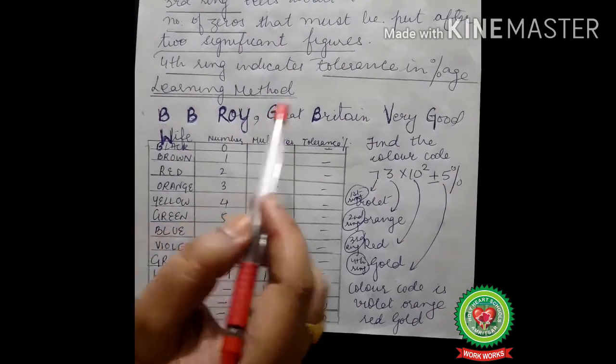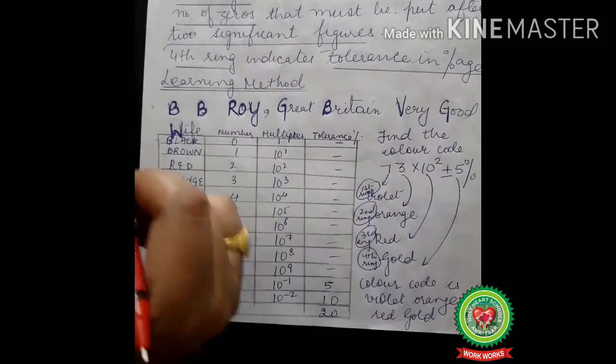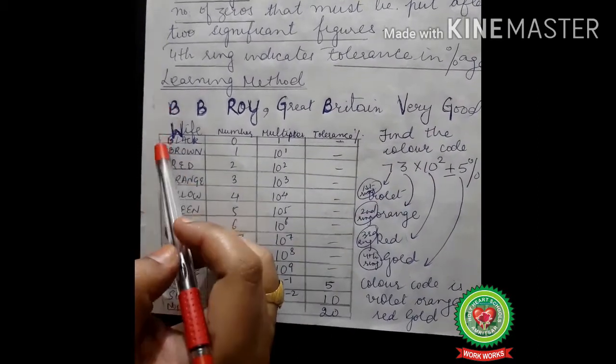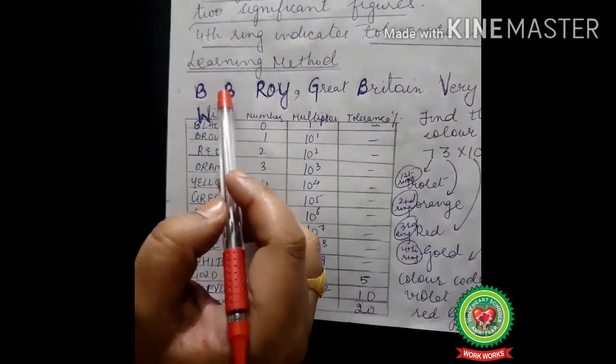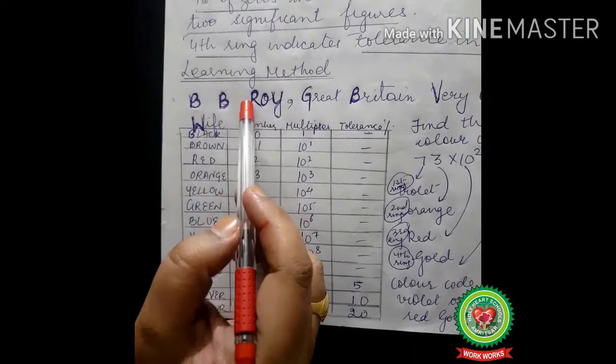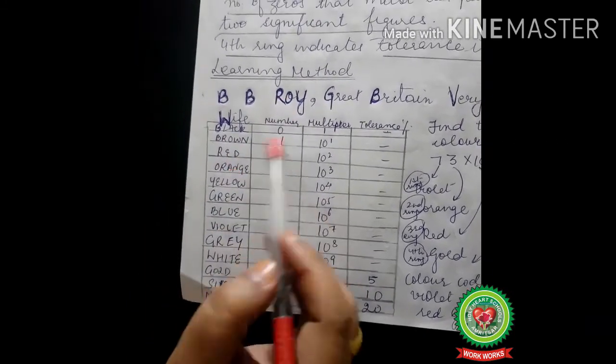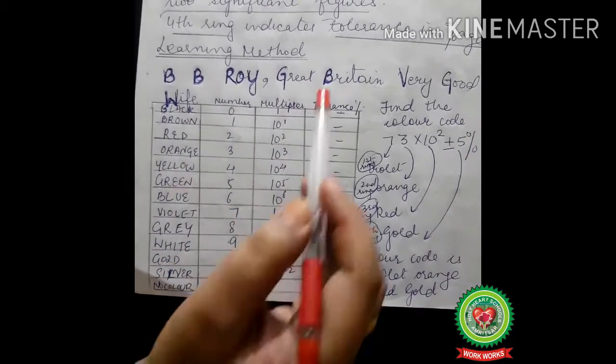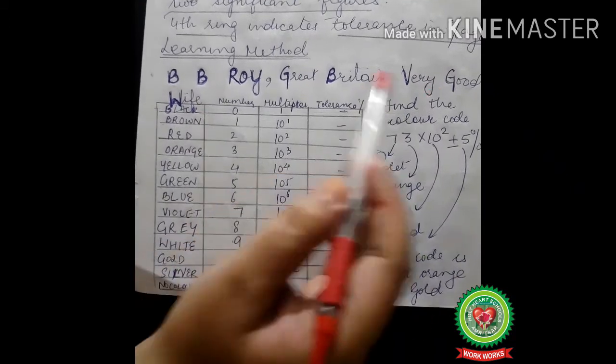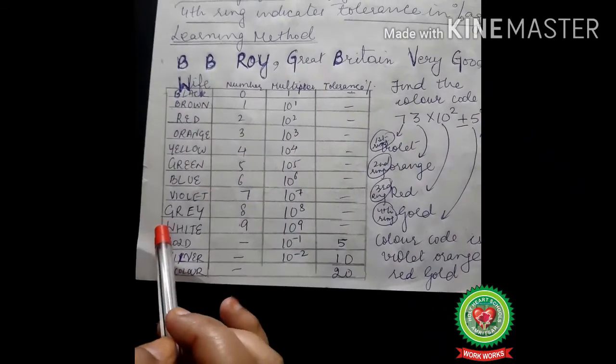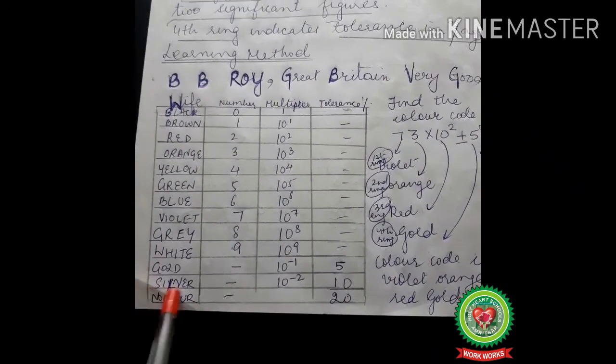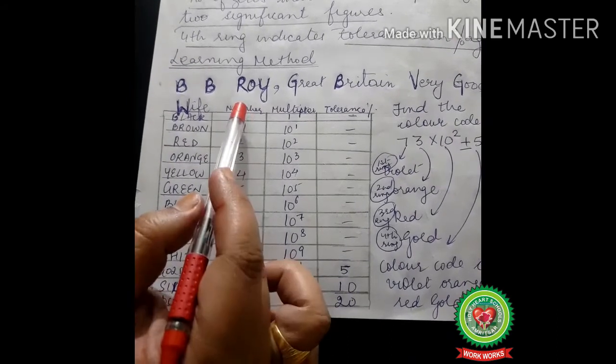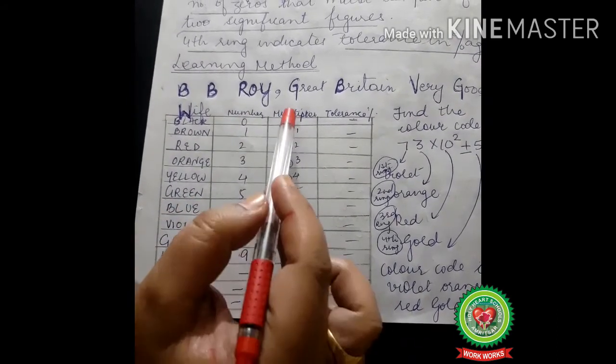BB Roy Great Britain Very Good Wife is the way how to learn this table. B here is black, sorry, B here is brown. Then comes R red, then O is orange, then Y is yellow, G is green, B is again blue, then V is violet, then G is gray, then W here is white, then gold, silver, and no color.